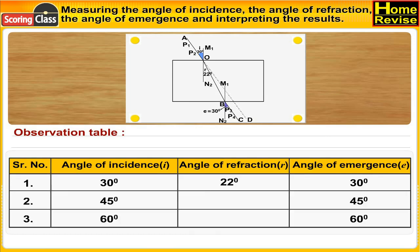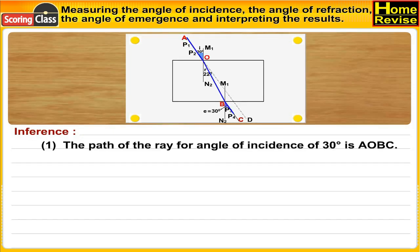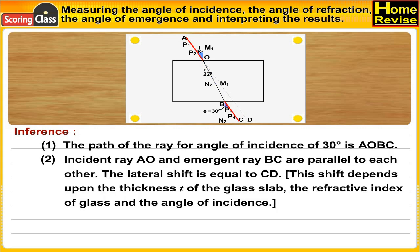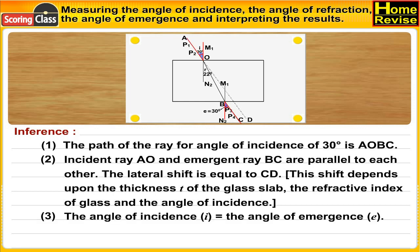The observation table has columns for serial number, angle of incidence I, angle of refraction R, and angle of emergence E. For an angle of incidence of 30 degrees, the path of the ray is A-O-B-C. The incident ray AO and emergent ray BC are parallel to each other. The lateral shift is equal to CD, and this shift depends upon the thickness T of the glass slab, the refractive index of glass, and the angle of incidence. The angle of incidence I is equal to the angle of emergence E.